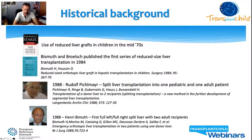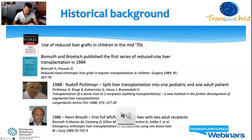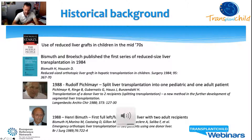In his autobiography, Starzl reported the use of reduced liver grafts in children in the mid-1970s. In 1984, Bismuth and Broelsch published the first series of reduced liver transplantation. In 1988, Rudolf Broelsch was the pioneer of split liver, enabling the transplantation of two recipients — one pediatric and one adult — with one liver. In the same year, Henri Bismuth performed the first full left, full right split liver procedure with two adult recipients.